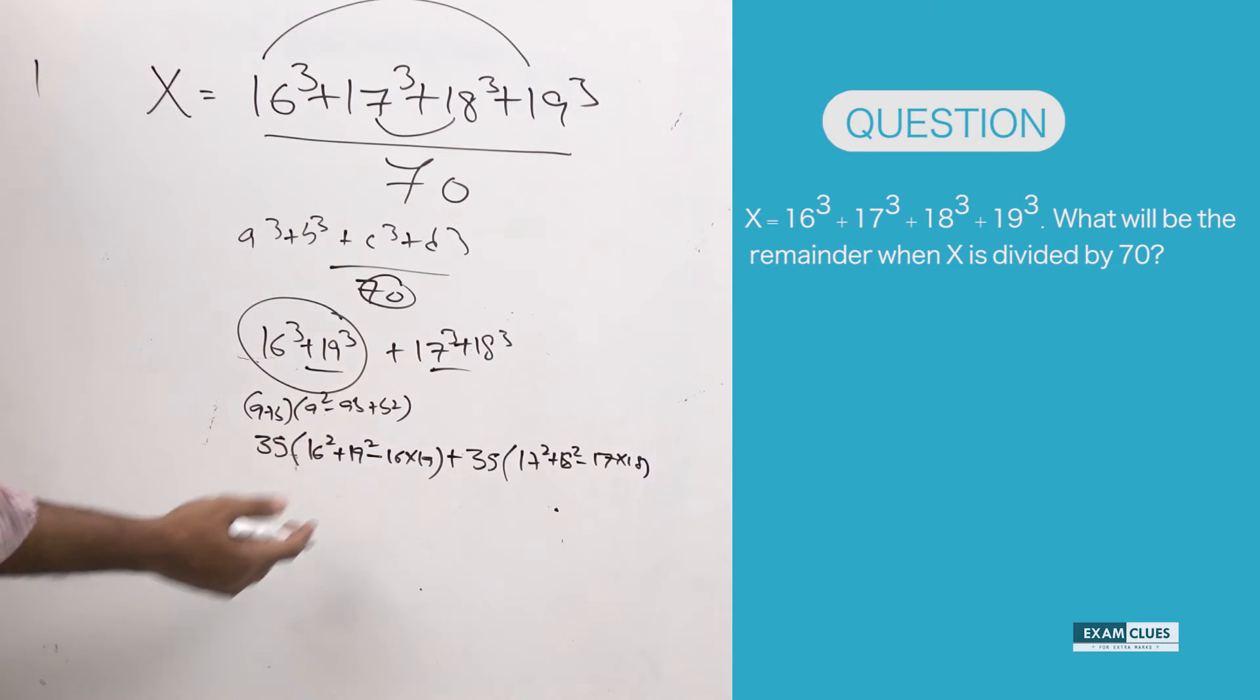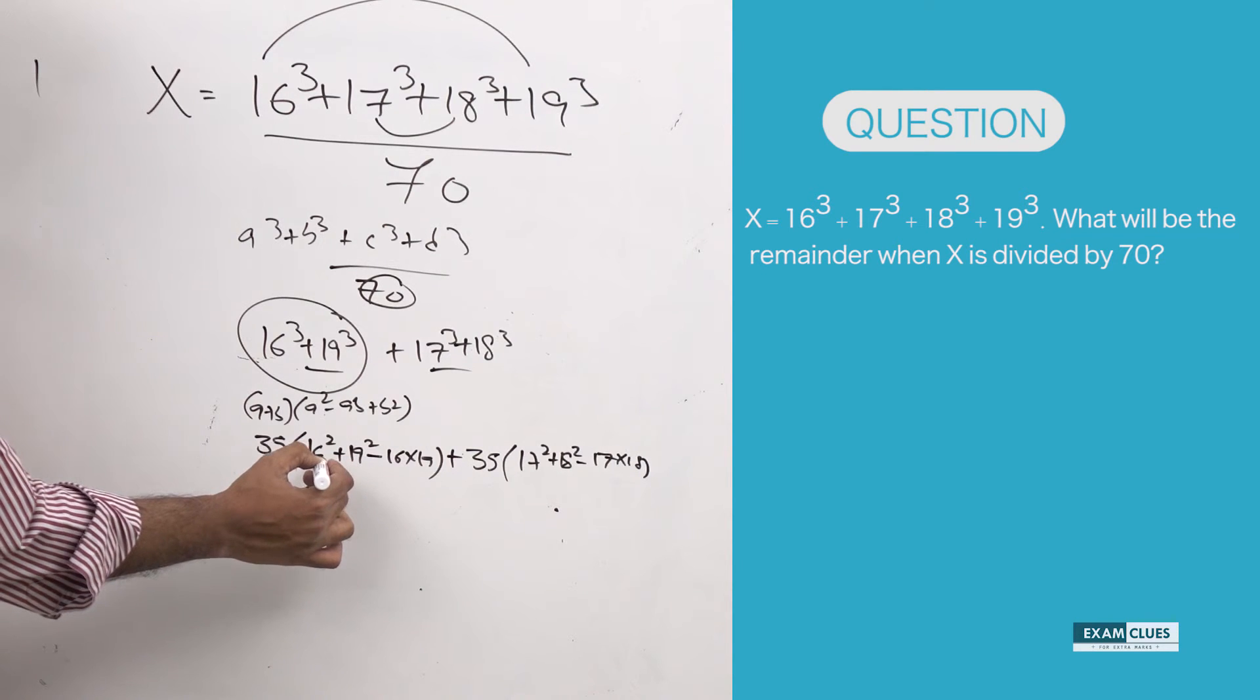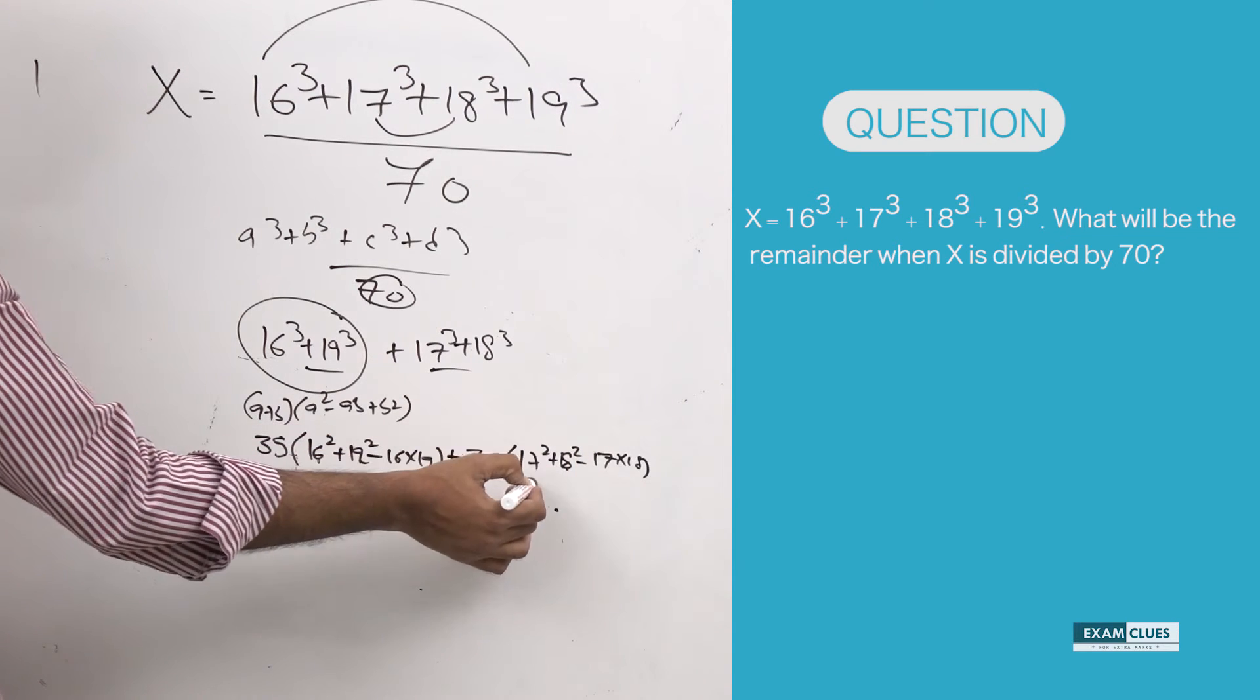We can take out 35 as common. Yes, I am taking out 35 as common. Now, what do you have? That is one even number, another even number, one odd number, another odd number. When you add two odd numbers anyway, you will get even number only.